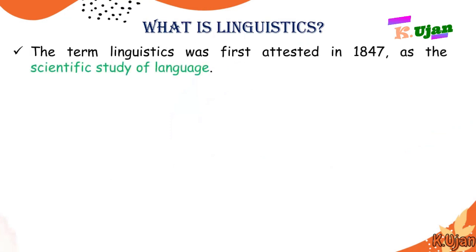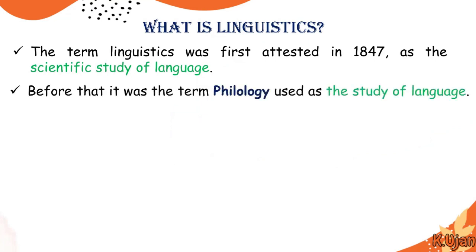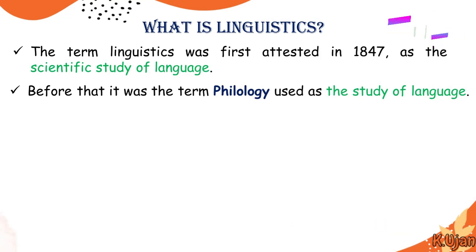The term 'linguistics' was first attested in 1847 as a scientific study of language. Before that, the term 'philology' was used as a study of language. From 1847 until now it is the scientific study of language, because we consider that language can be scientifically learned and examined.